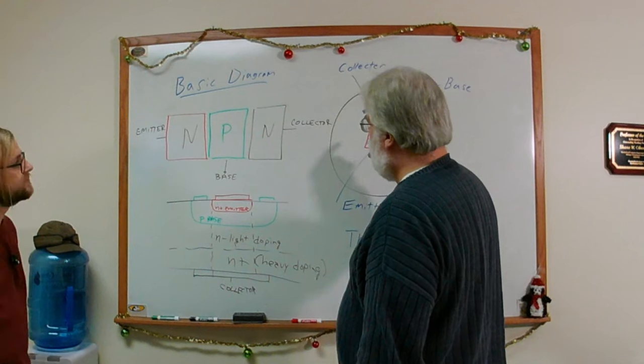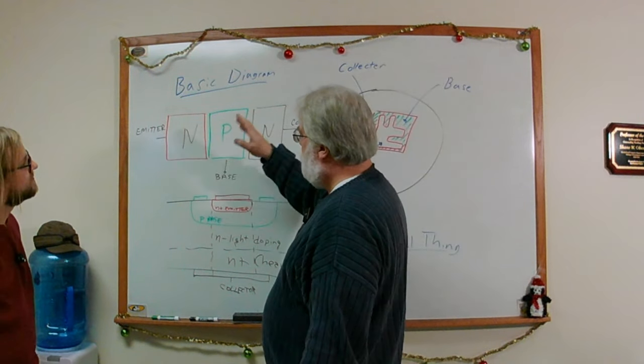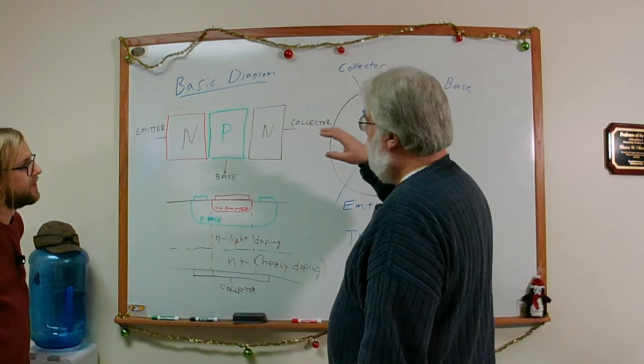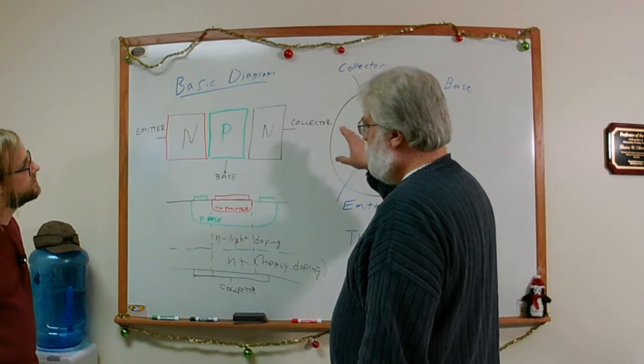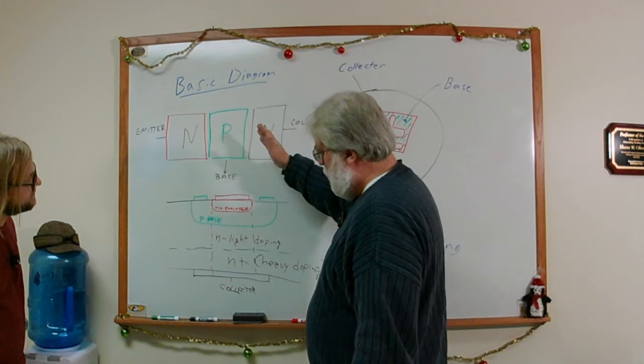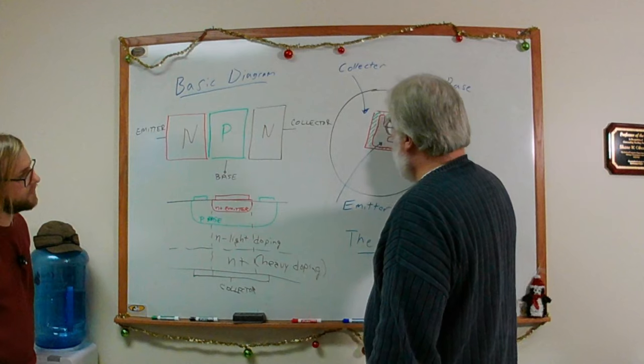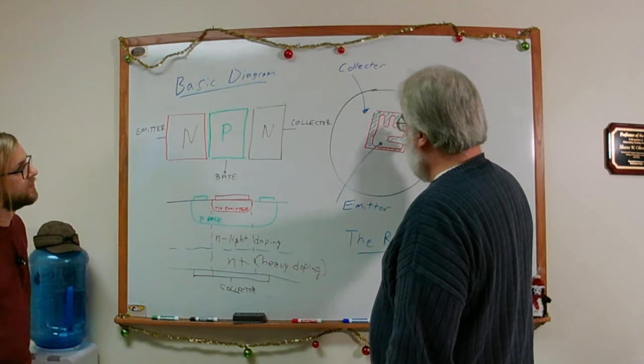It's useful to think about these blocks of an n-type emitter, a p-type base, and an n-type collector. Even though we lay those sideways in our typical analysis of these devices, it actually represents a vertical cross-section of the device.